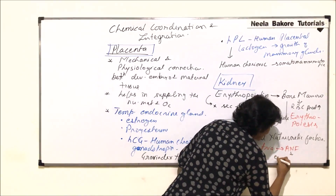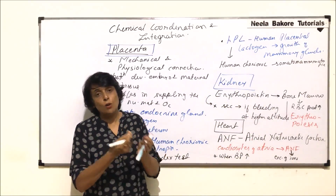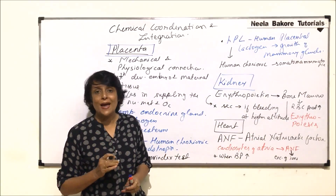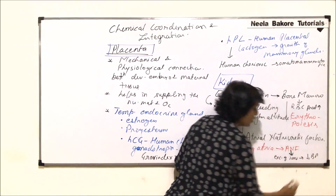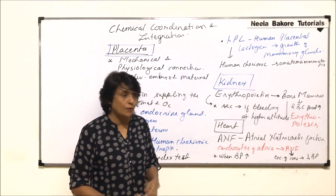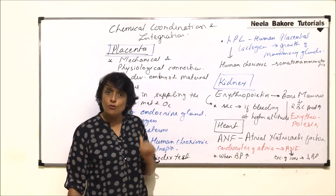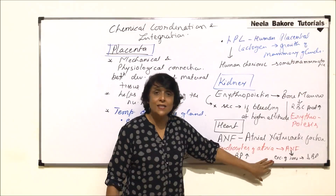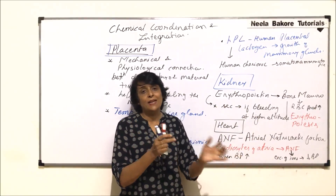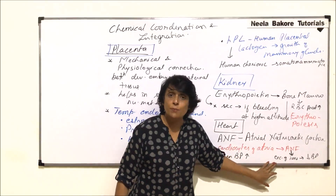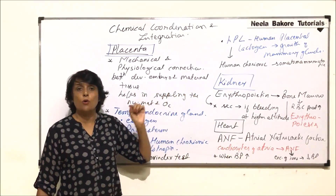The reason ANF is secreted is when blood pressure increases. If blood pressure rises, ANF is secreted by the cardiocytes of the auricles or atrium. This hormone promotes excretion of ions. If ions get excreted, water from the blood comes out, so blood pressure is brought back to normal. The role of ANF is to bring high blood pressure down to normal through excretion of ions.